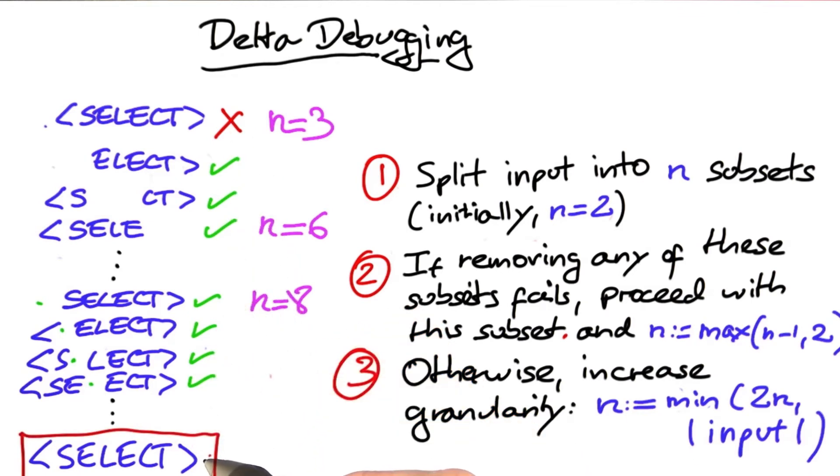So what delta debugging gives us in the end is an input, a simplified input, where every single part is relevant.